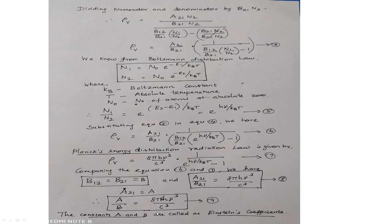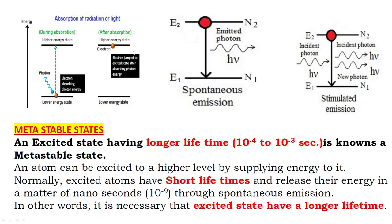The constants A and B derived using laser principles are called Einstein coefficients. The excited state energy levels referred to as metastable states have a longer lifetime of 10⁻⁴ to 10⁻³ seconds. After this period, the atoms suddenly return to the ground state, and laser beams are produced.